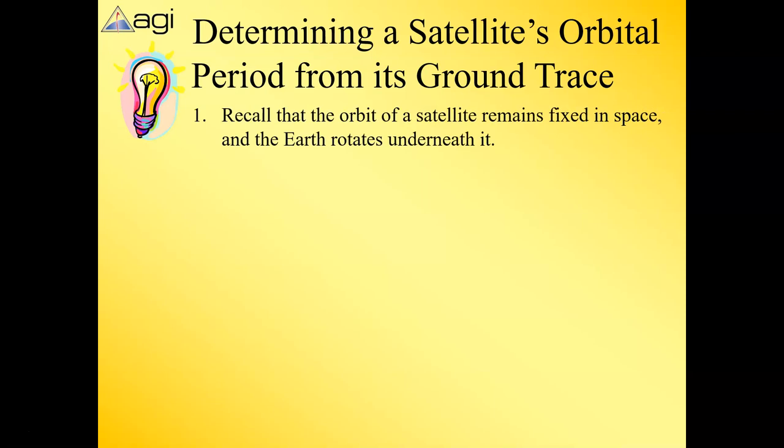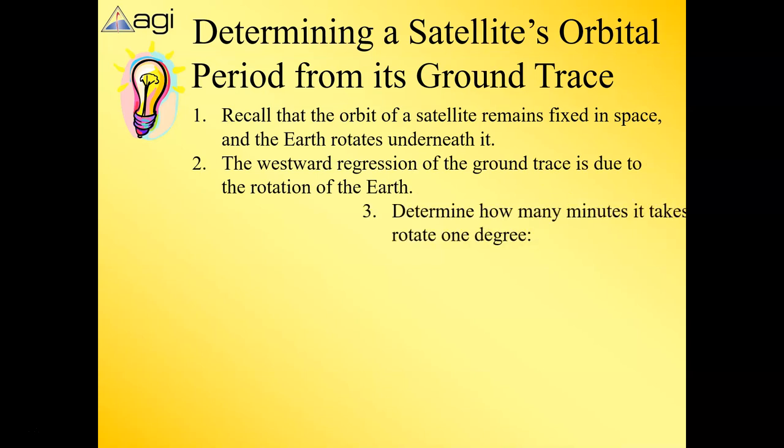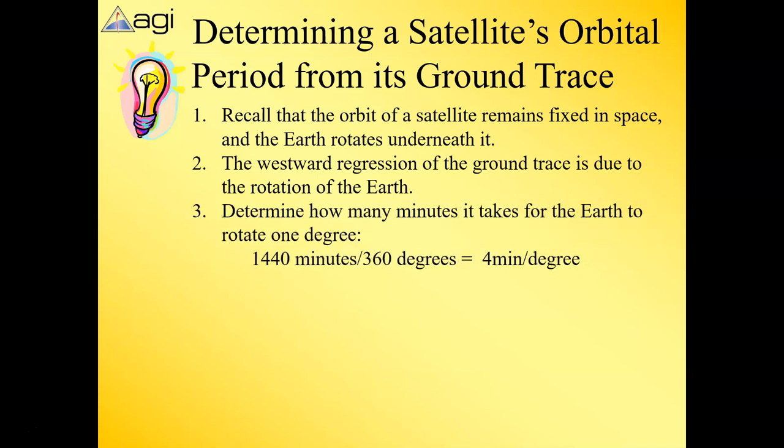Remember that the satellite remains fixed in space—or its orbital plane does with respect to the Earth—but the Earth rotates. That's why it moves from east to west. One thing we need to know from science is how long it takes for Earth to rotate: 360 degrees in one day. One day is 1440 minutes, so we can determine that each degree of rotation takes four minutes.